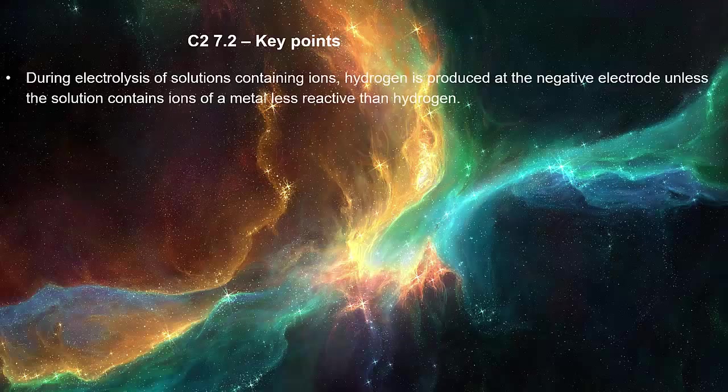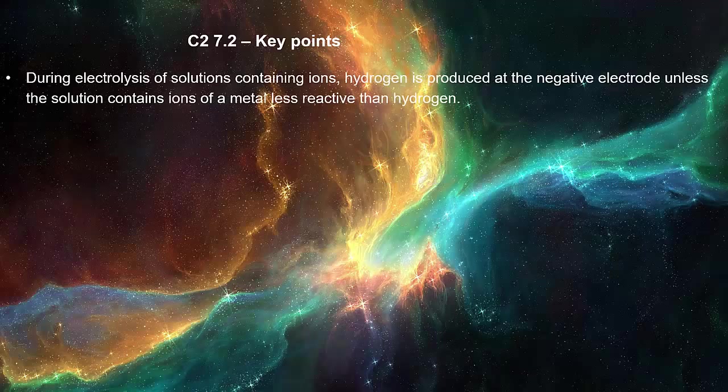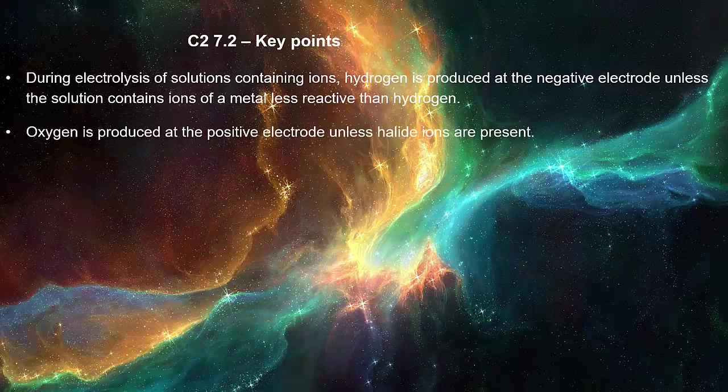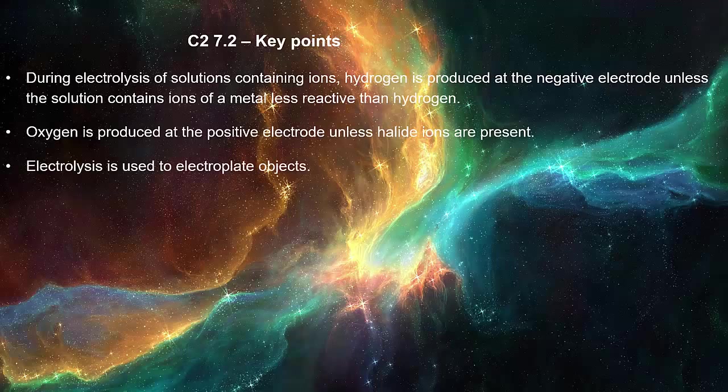During electrolysis of solutions containing ions, hydrogen is produced at the negative electrode unless the solution contains ions of a metal less reactive than hydrogen. Oxygen is produced at the positive electrode unless halide ions are present. Electrolysis is used to electroplate objects.